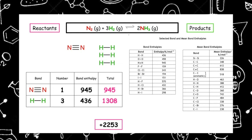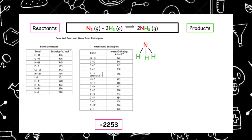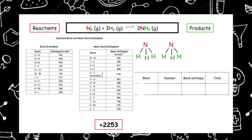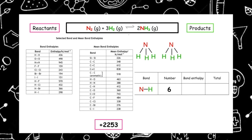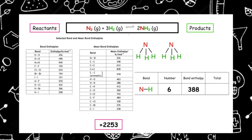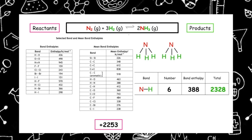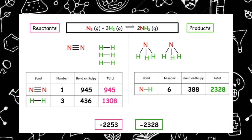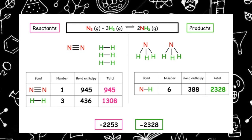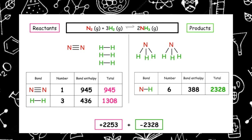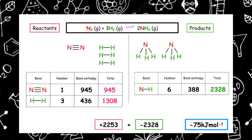Now let's look at the product side. We have to draw ammonia, which is in a trigonal pyramidal arrangement. The bond we have is the N–H single bond; we have 6 of those. Looking up the mean bond enthalpy gives 388, so 6 × 388 = 2328. This is an exothermic reaction so the total is −2328. Adding 2253 + (−2328) gives a total enthalpy change of −75 kJ mol⁻¹.